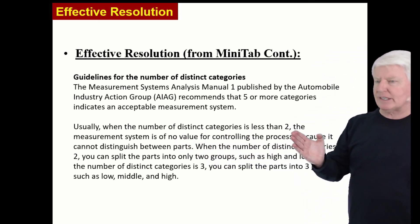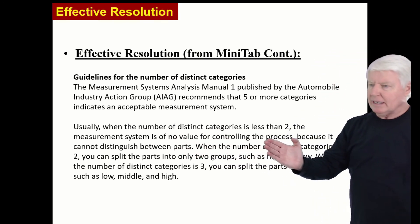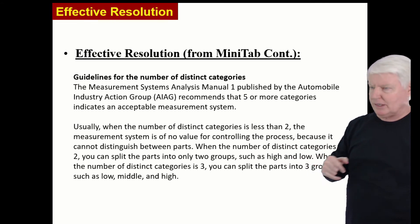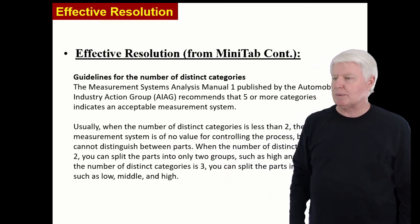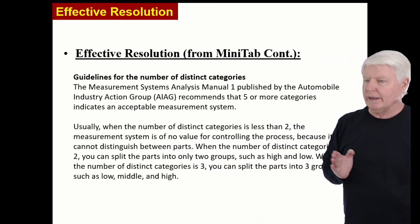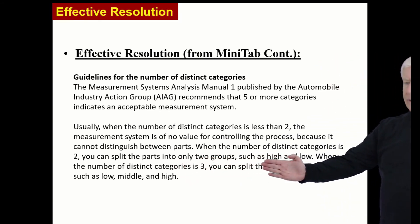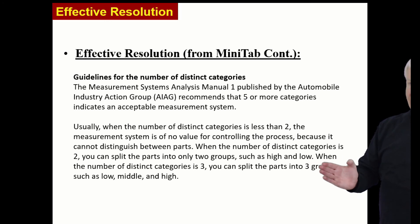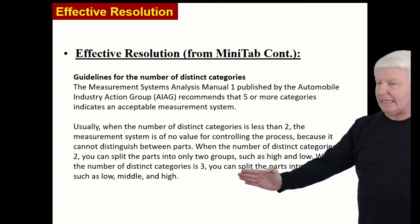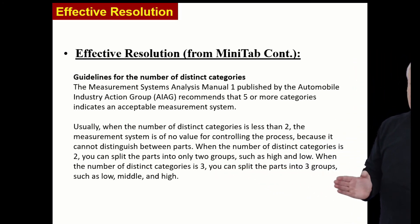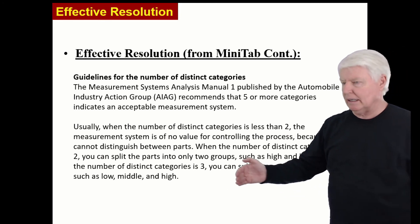Usually when the number of distinct categories is less than two, the measurement system is of no value for controlling the process because it cannot distinguish between parts. When the number of distinct categories of two, you can split the parts into only two groups, such as high and low. When the number of distinct categories is three, you can split the parts into three groups, low, middle, and high.